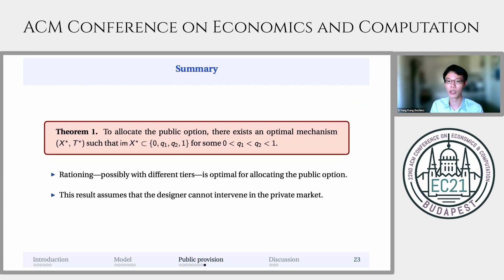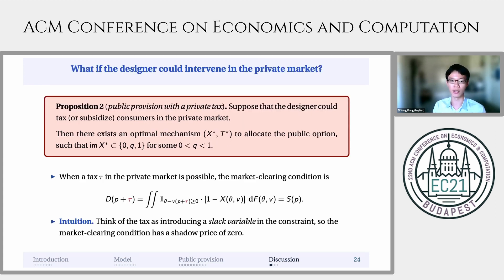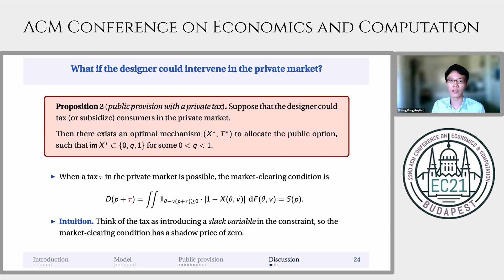This concludes the proof sketch showing that rationing — possibly with up to three different tiers — is optimal for allocating the public option. But this result assumes the designer cannot intervene in the private market. Returning to the initial motivation: there are two policy levers — intervention in the private market through a tax or subsidy, and providing the public option. If the designer could intervene in the private market via a tax or subsidy, the optimal provision mechanism for the public option would require one fewer rationing option. Intuitively, a tax in the private market creates slack in the market clearing constraint, so it never binds, meaning only the budget balance constraint could potentially bind and one fewer rationing option is required.